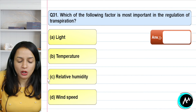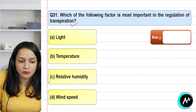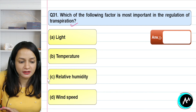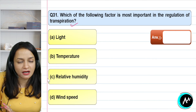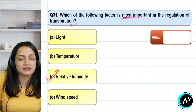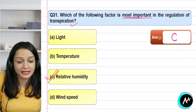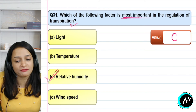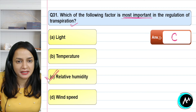Question 31: which of the following factors is most important in the regulation of transpiration? The factors given are light, temperature, relative humidity, and wind speed. All these factors are involved, but the most important one is relative humidity. The humidity in the surrounding environment decides whether the rate of transpiration is high or low. The correct answer for question 31 is option C — relative humidity.